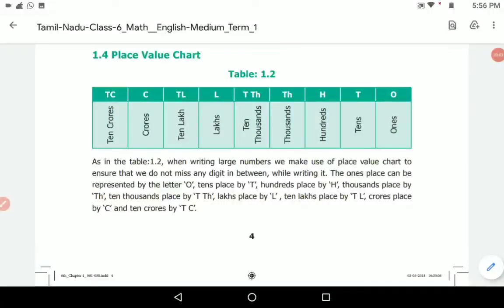Dear children, welcome to Samachi Solutions. In this video we are going to see place value chart. Let us see Table 1.2. There is the number chart, the place value chart, starting from right to left. Whenever we are getting this kind of number chart, we have to read from right to left - ones, tens, hundreds, thousands, ten thousands.